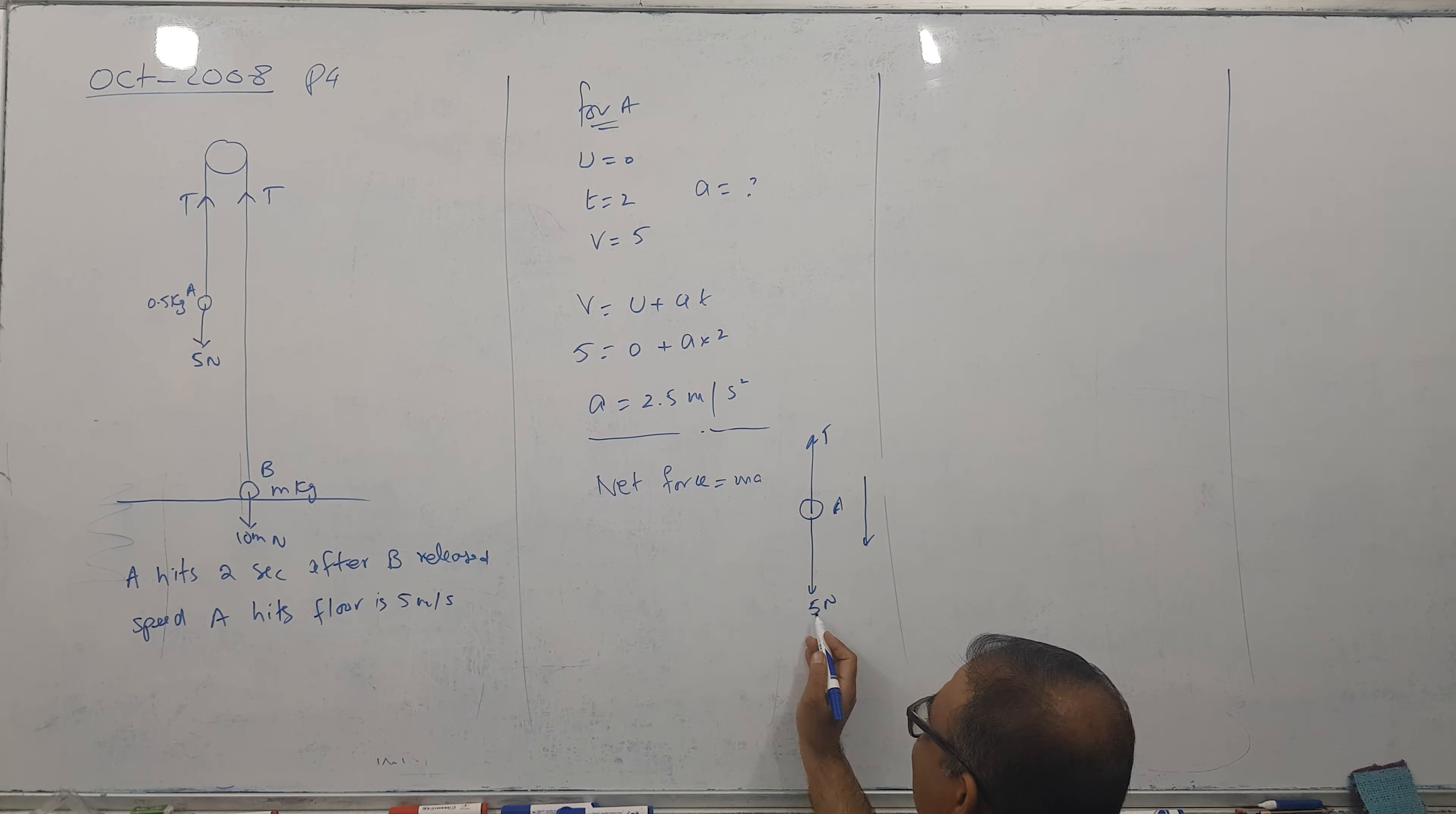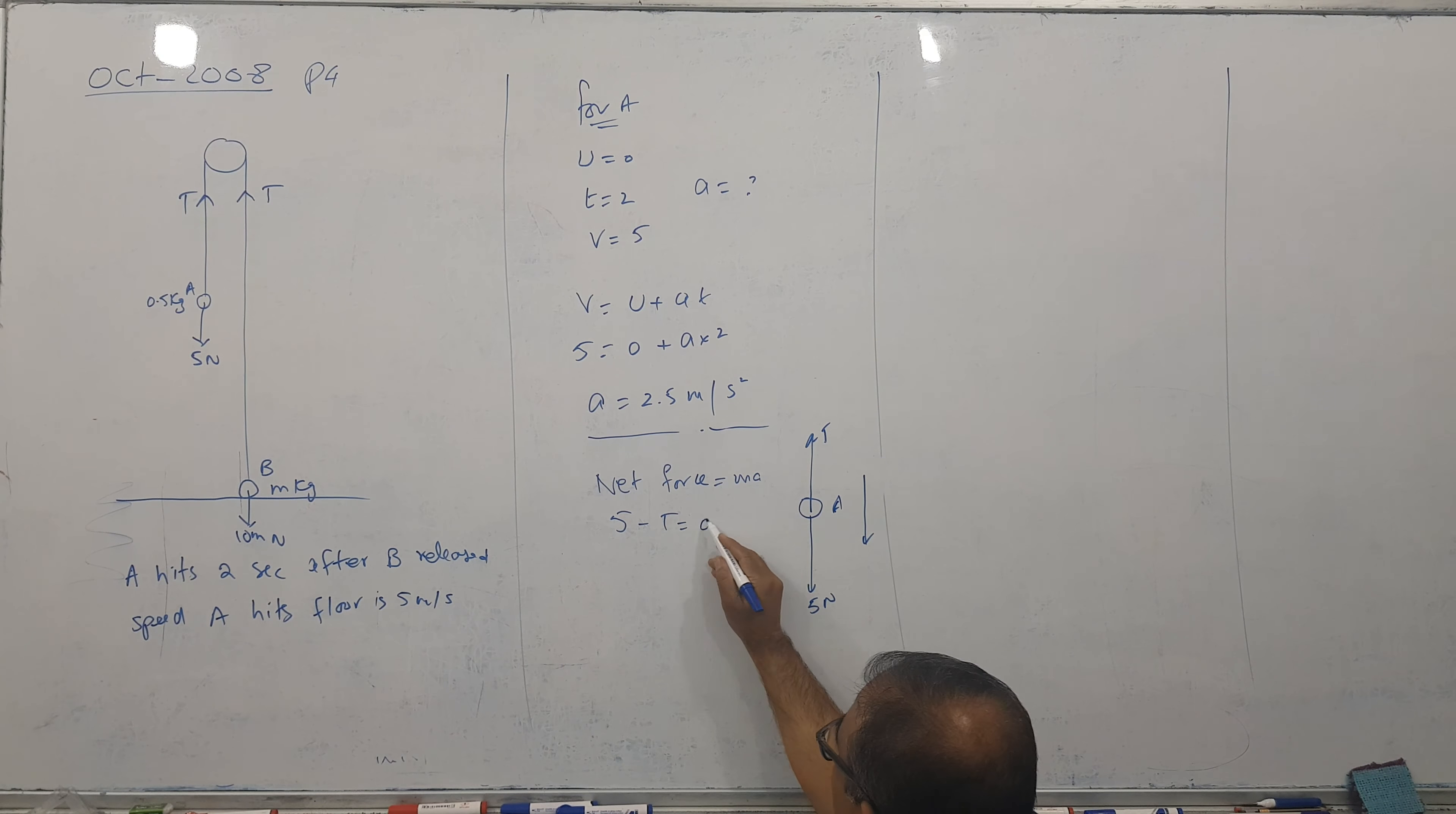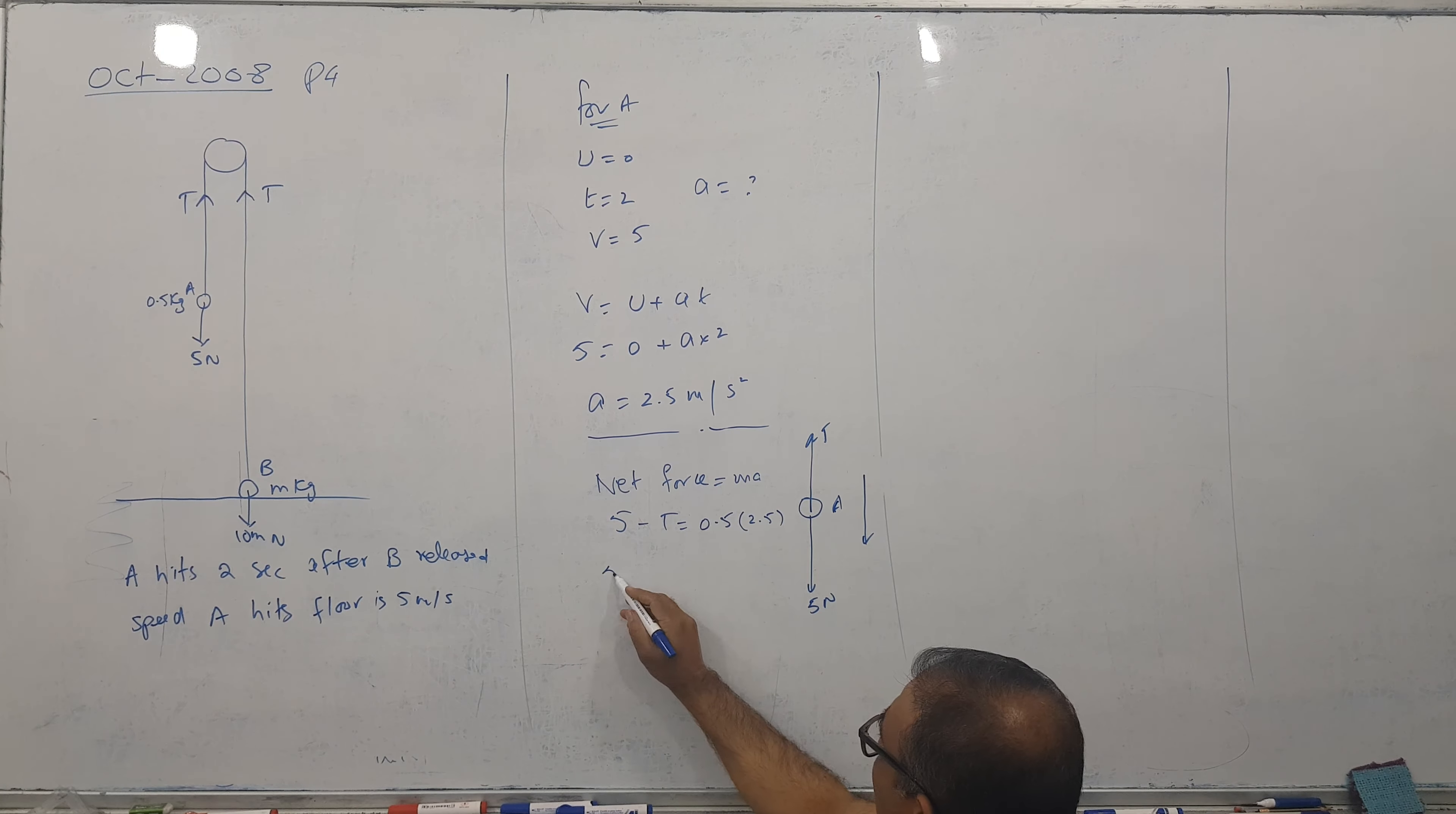So I can say 5 minus tension equal to MA and mass of A is 0.5, so 0.5 and acceleration is 2.5. And tension comes this way and 5 goes this way.